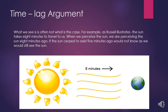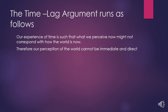Finally, there is the time lag argument against direct realism. What we see is often not what is currently the case. As Russell illustrates, sunlight takes eight minutes to travel to us — when we perceive the sun, we're perceiving it as it was eight minutes ago. If the sun ceased to exist five minutes ago, we would still see it and not know. So what we see is not what is the case, meaning our perception cannot be immediate and direct, as direct realists insist.